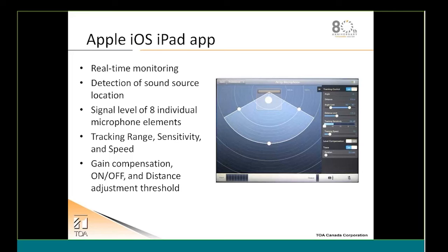The three adjustment points visible in the app window — right, left, and bottom center — are all adjustable, allowing you to narrow the beam width in any direction. For example, if a speaker is always on the left side, you can cut off a full 90-degree angle on the right, and the microphone will ignore anyone speaking there. The app also provides gain compensation and remote on/off control.